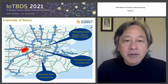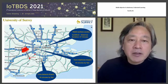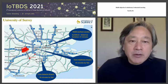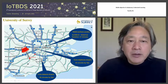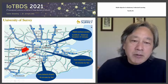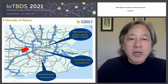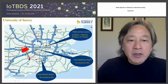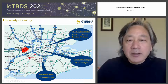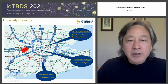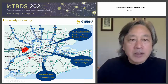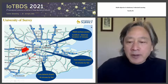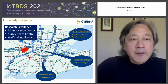A few words about the University of Surrey. Surrey is located very close to London — some 40 miles southwest — in Guildford. It's also very close to the two biggest airports, Heathrow and Gatwick.